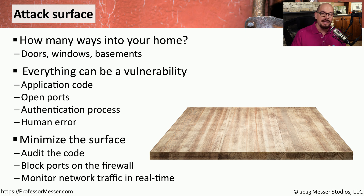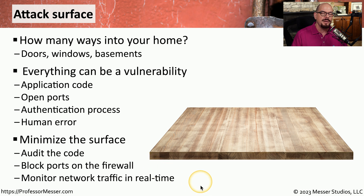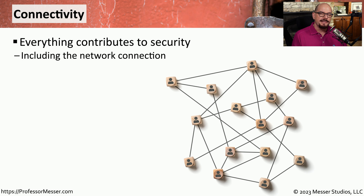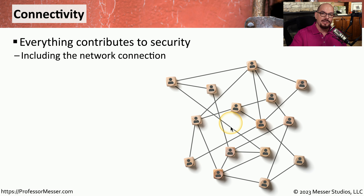For example, we may want to audit any code that we're putting into our network. We might want to specifically block certain ports on our firewall, and we'll always be monitoring traffic in real time to get an idea of who's entering our network and what applications are being used. Part of that attack surface is the connectivity that we build throughout our network. Every device on our network tends to be connected in some way to every other device, so it's important that we integrate security into the network connectivity as well.